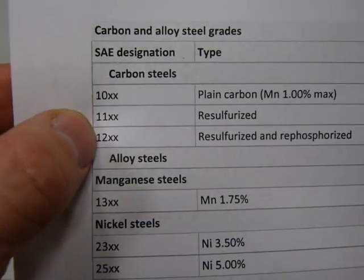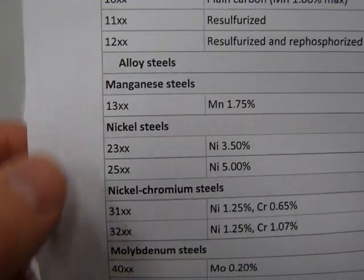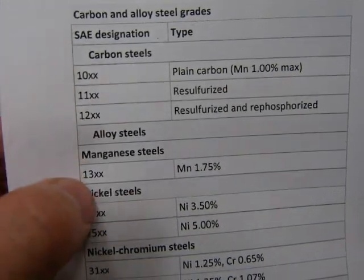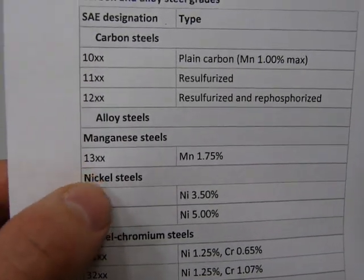All carbon steels start with digit 1, and the rest of the alloy steels start with digits 3 and up.